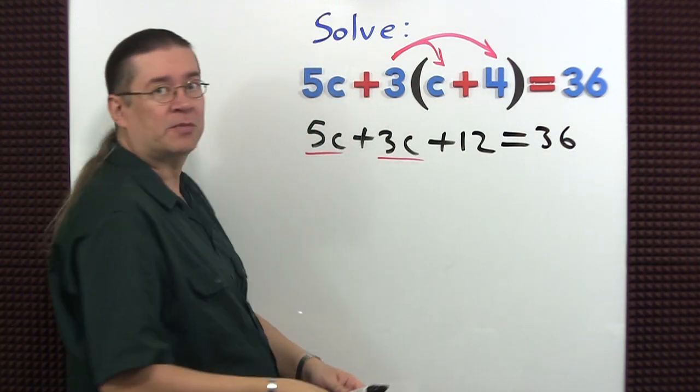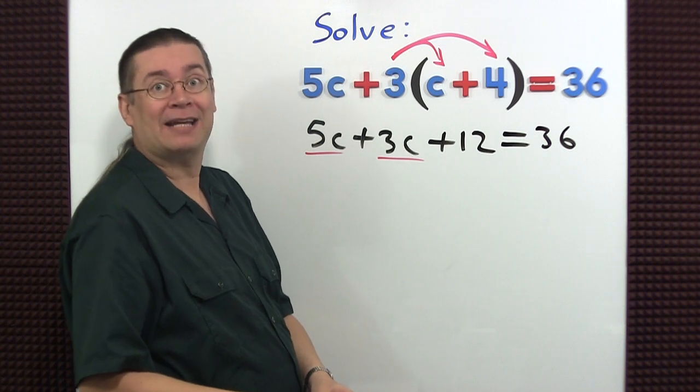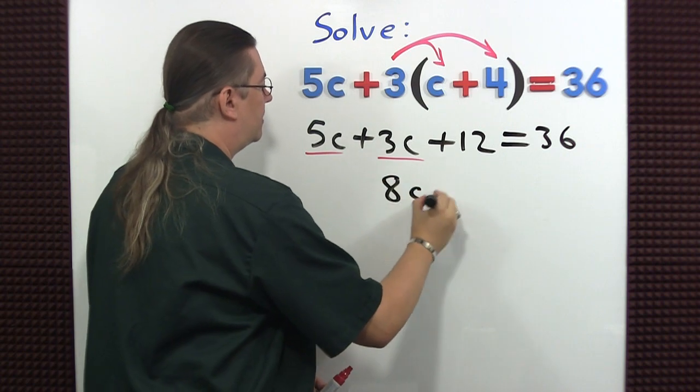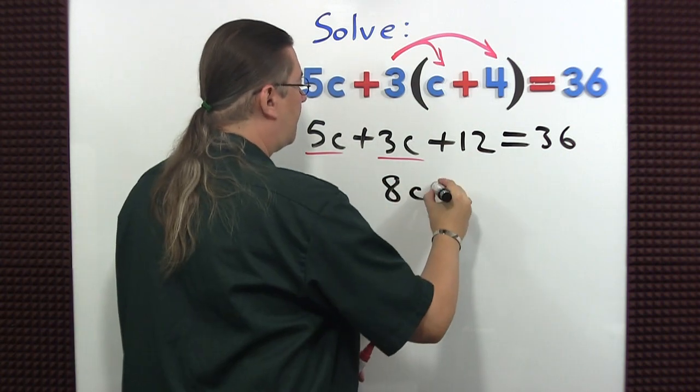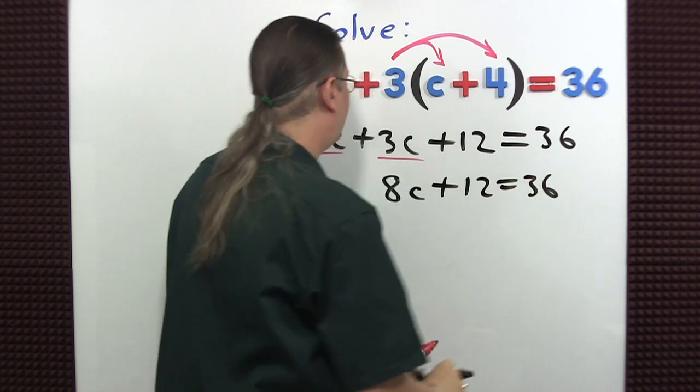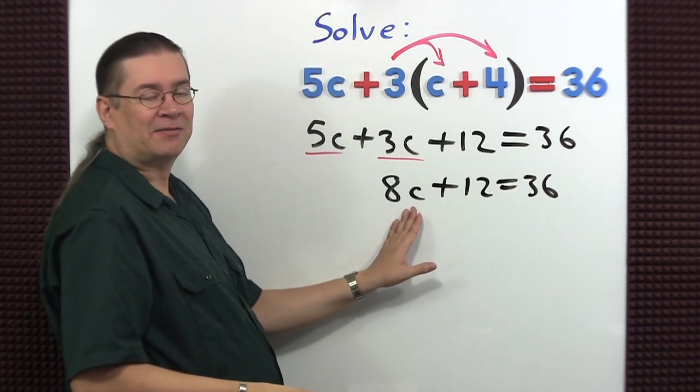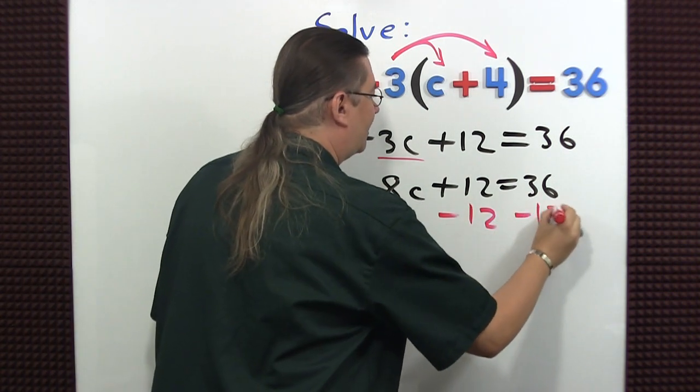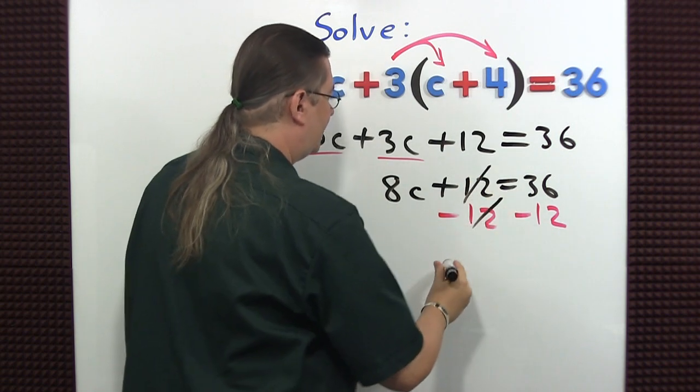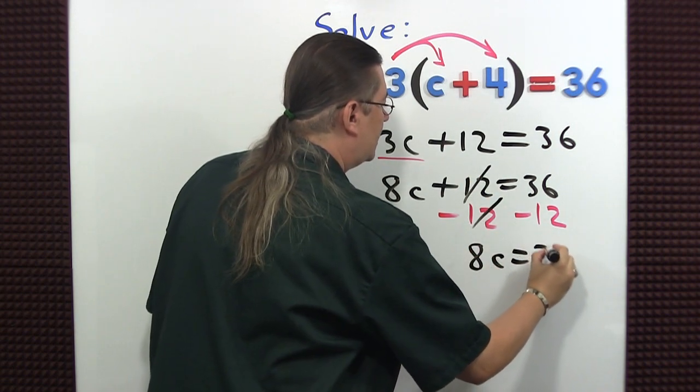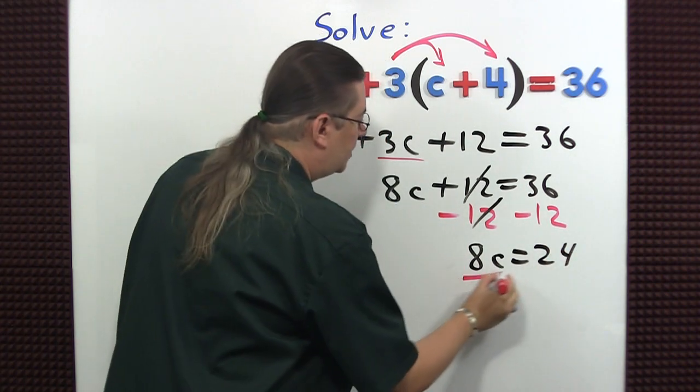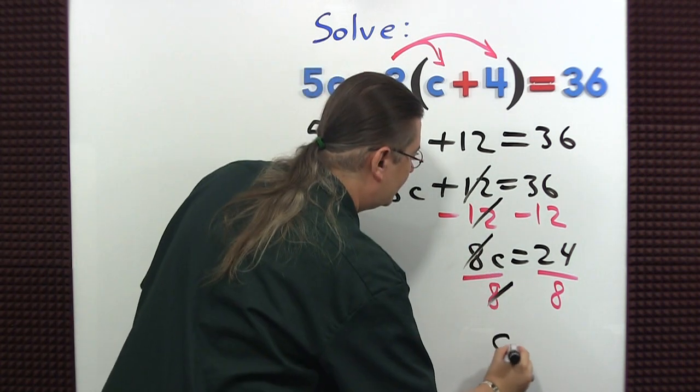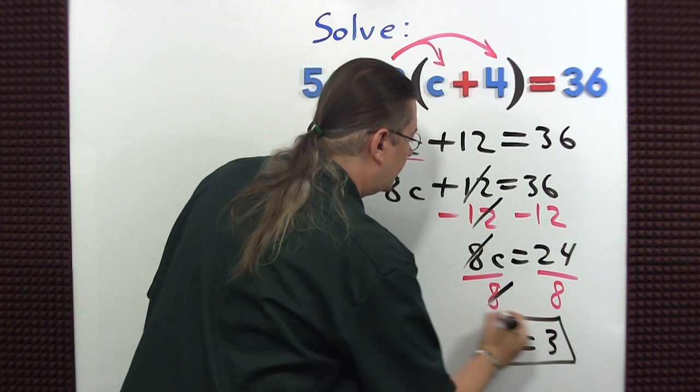Notice we have two terms with a c in them. We have like terms. Let's combine them. 5c plus 3c is 8c. Everything else stays the same. Now what do we do to get c by itself? Subtract 12. 8c is equal to 24. And then we just divide both sides by 8. So c equals 3.